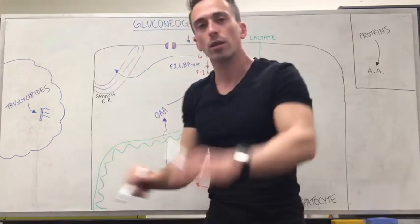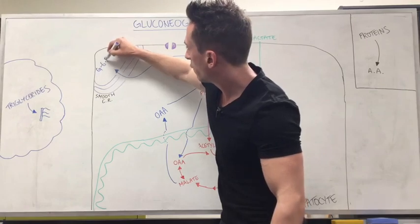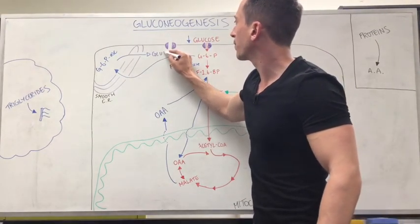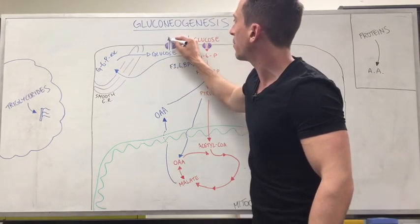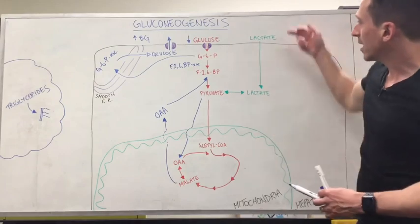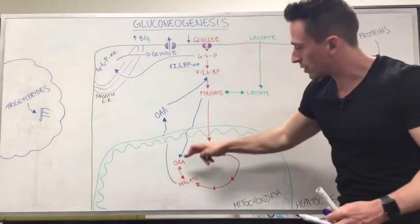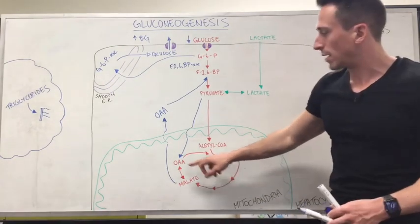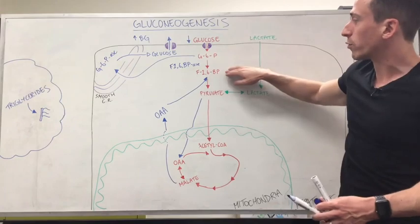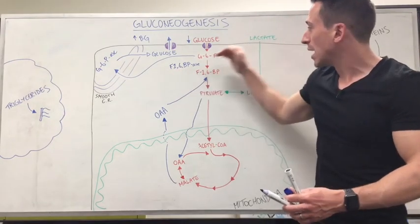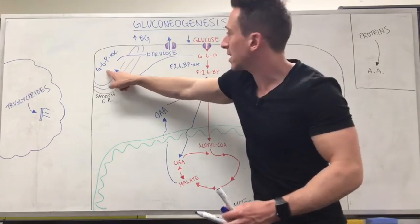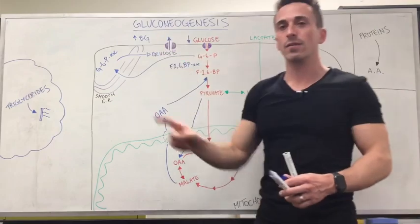In the smooth endoplasmic reticulum, it encounters an enzyme called glucose-6-phosphatase, which converts glucose-6-phosphate into glucose. This glucose can then exit the hepatocyte, giving us an increase in blood glucose levels — exactly what we wanted. So to summarize the lactate pathway: lactate from muscle turns into pyruvate, which enters the mitochondria and becomes oxaloacetate, which becomes malate, which exits the mitochondria and turns back into oxaloacetate, enters the glycolytic pathway going backwards, gets caught at fructose 1,6-bisphosphate, fructose 1,6-bisphosphatase helps it proceed, it continues back to glucose-6-phosphate, enters the smooth endoplasmic reticulum, glucose-6-phosphatase converts it to glucose, and it leaves the cell.